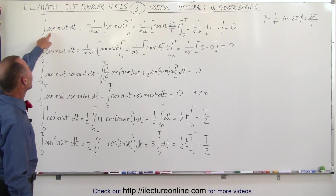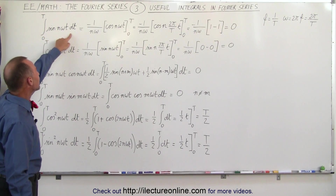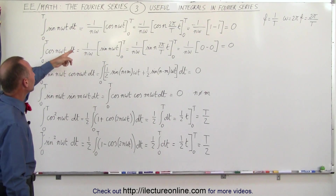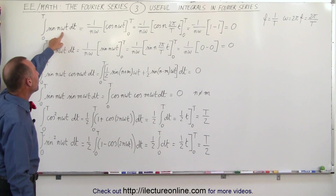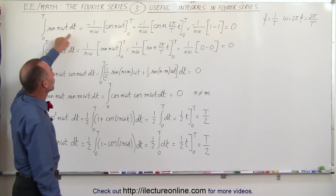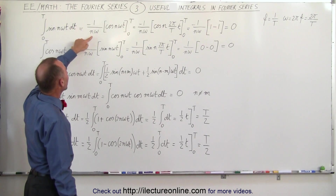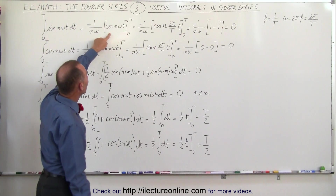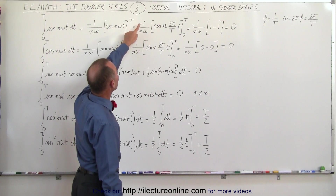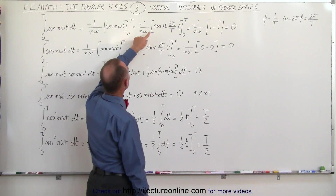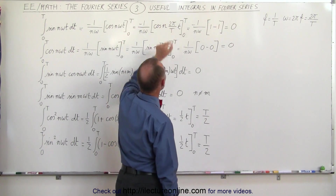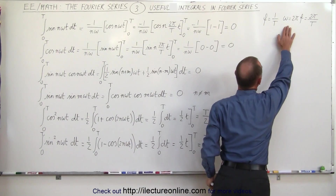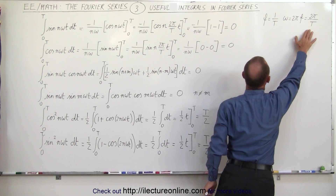If we integrate the sine of n omega t dt from zero to T, when we integrate the sine that's equal to the negative cosine. We need the n omega in the differential, so we write minus one over n omega times the cosine, evaluated from zero to T, which equals minus one over n omega times the cosine of n times two pi over T. That comes from omega written as two pi f, which is two pi over T.